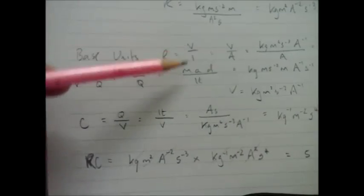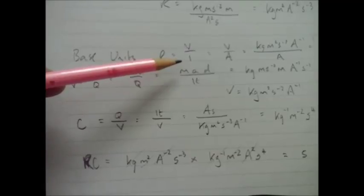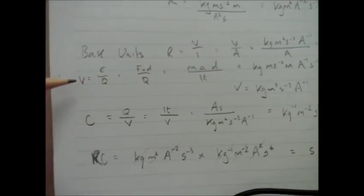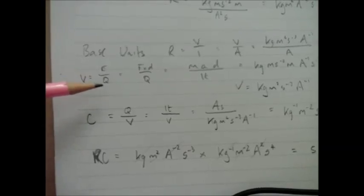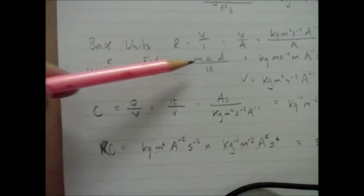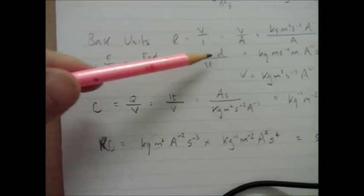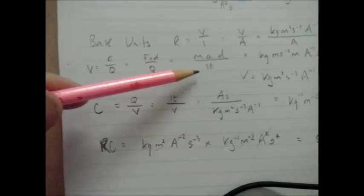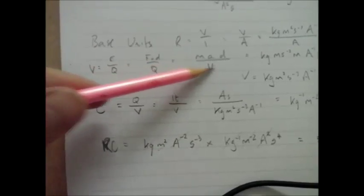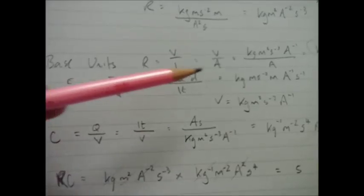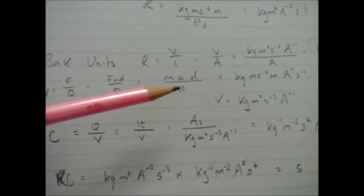Ultimately, we want to do R times C. So R, resistance, equals voltage over current. Current is easy, that's just measuring amps. But voltage is a bit more difficult. Voltage is energy per charge, and energy is force times distance. And force is mass times acceleration. So we've got mass times acceleration times distance divided by charge, which is current times time.